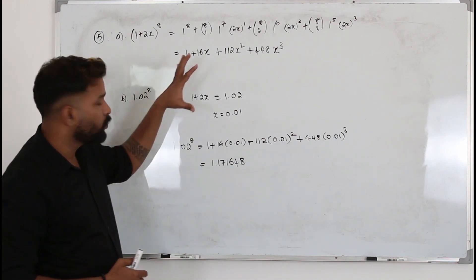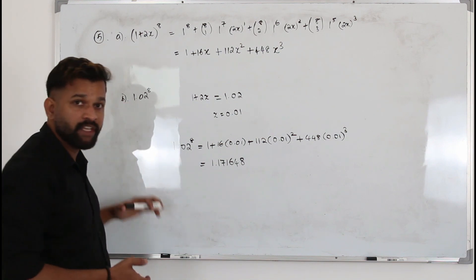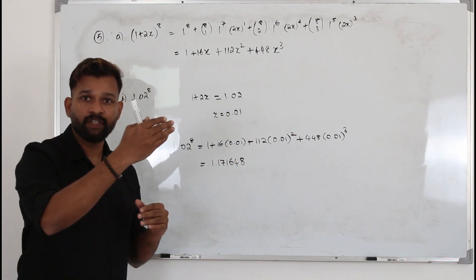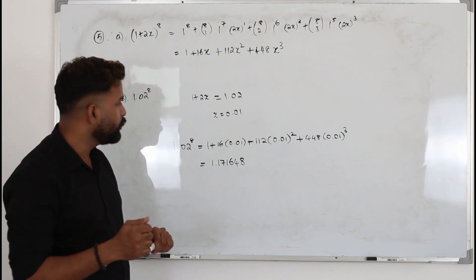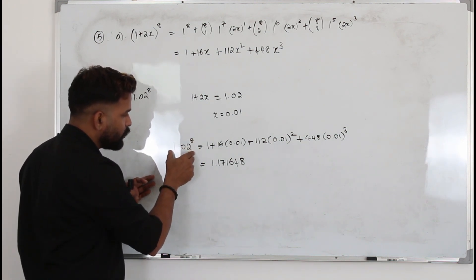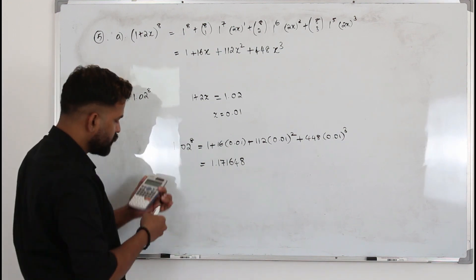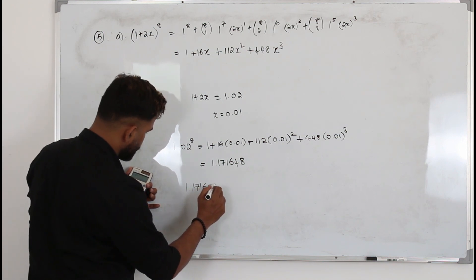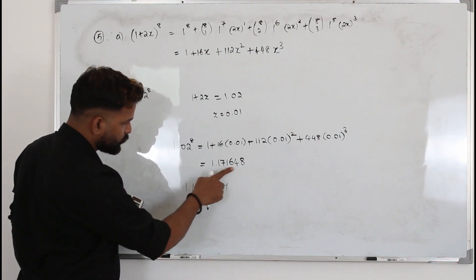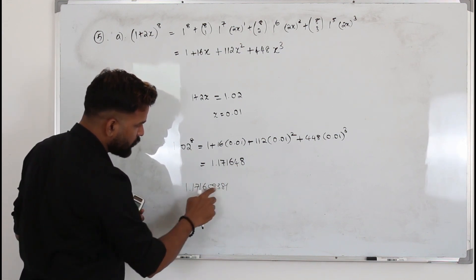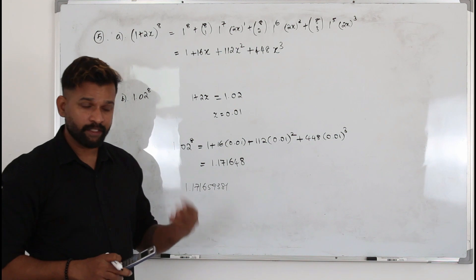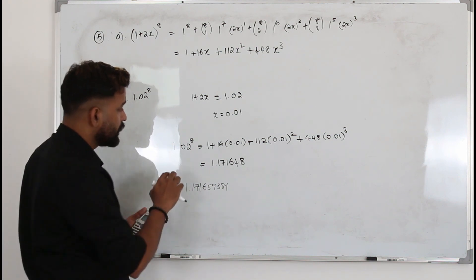Now there's one more thing to explain. Say there's a Part C asking whether the approximation is an overestimation or underestimation. Use your calculator to find the actual value of 1.02⁸. I got 1.171659381. Comparing: 1.171648 vs 1.171659... the actual value is bigger, so what we calculated is an underestimation.